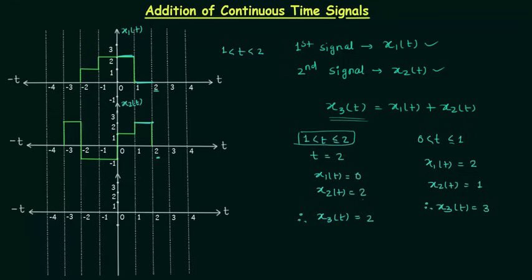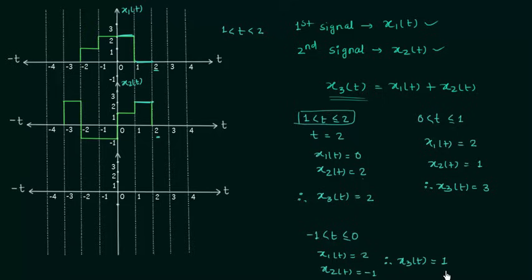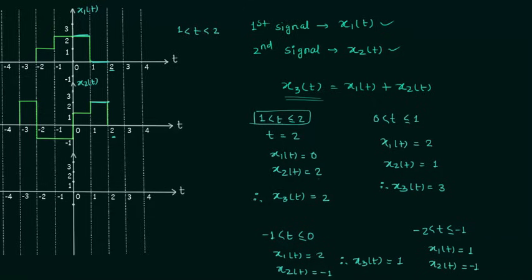Now we will find x3(t) when time t is less than or equal to 0 and greater than minus 1. Then we find x3(t) when t is less than or equal to minus 1 but greater than minus 2. Signal x1(t) is equal to 1 and signal x2(t) is equal to minus 1. Therefore signal x3(t) is equal to 0.